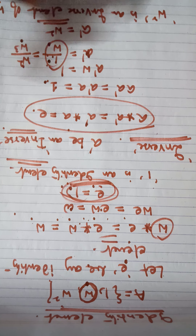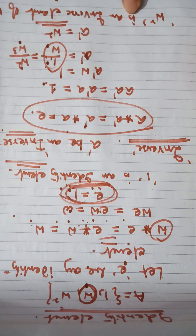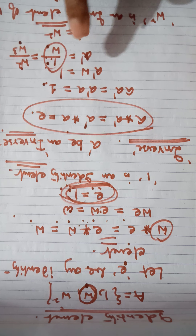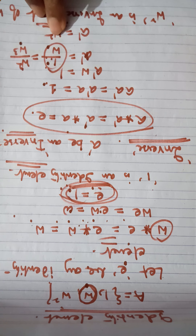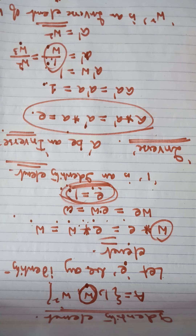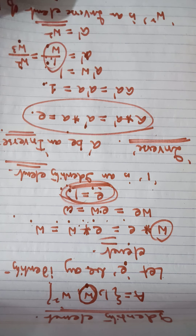Similarly, the distributive property can also be proved for this set. The set A = {1, omega, omega squared} — the cube roots of unity — with composition as multiplication satisfies all properties: closure, commutative, associative, identity, inverse, and distributive.